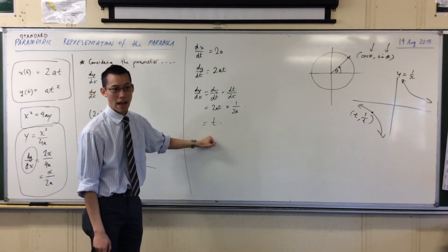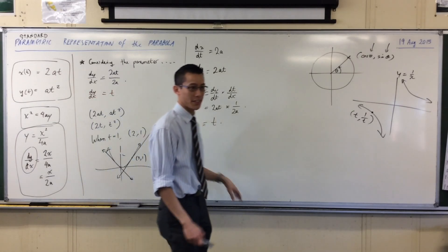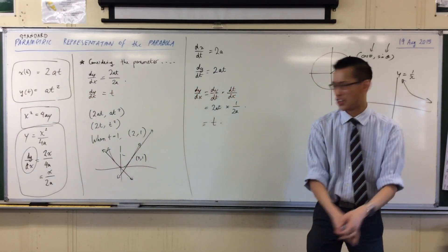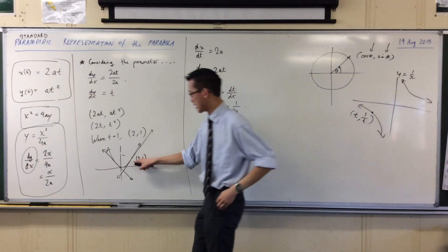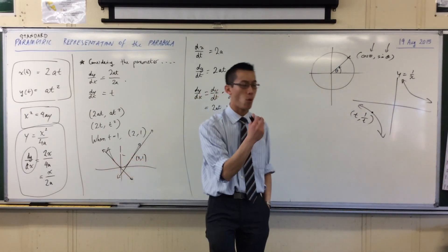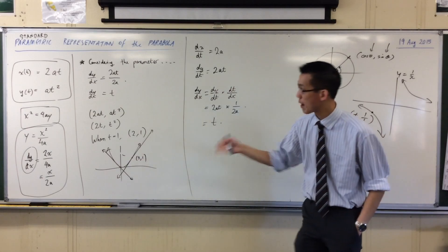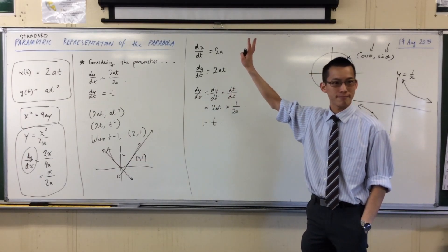So, keep this in your back pocket. It's going to become very significant. But, every time you get a given a question, you're like, okay, try t equals this, try t equals that. What you're really finding is the gradient at whatever point you're interested in. That's what the parameter is for this representation.